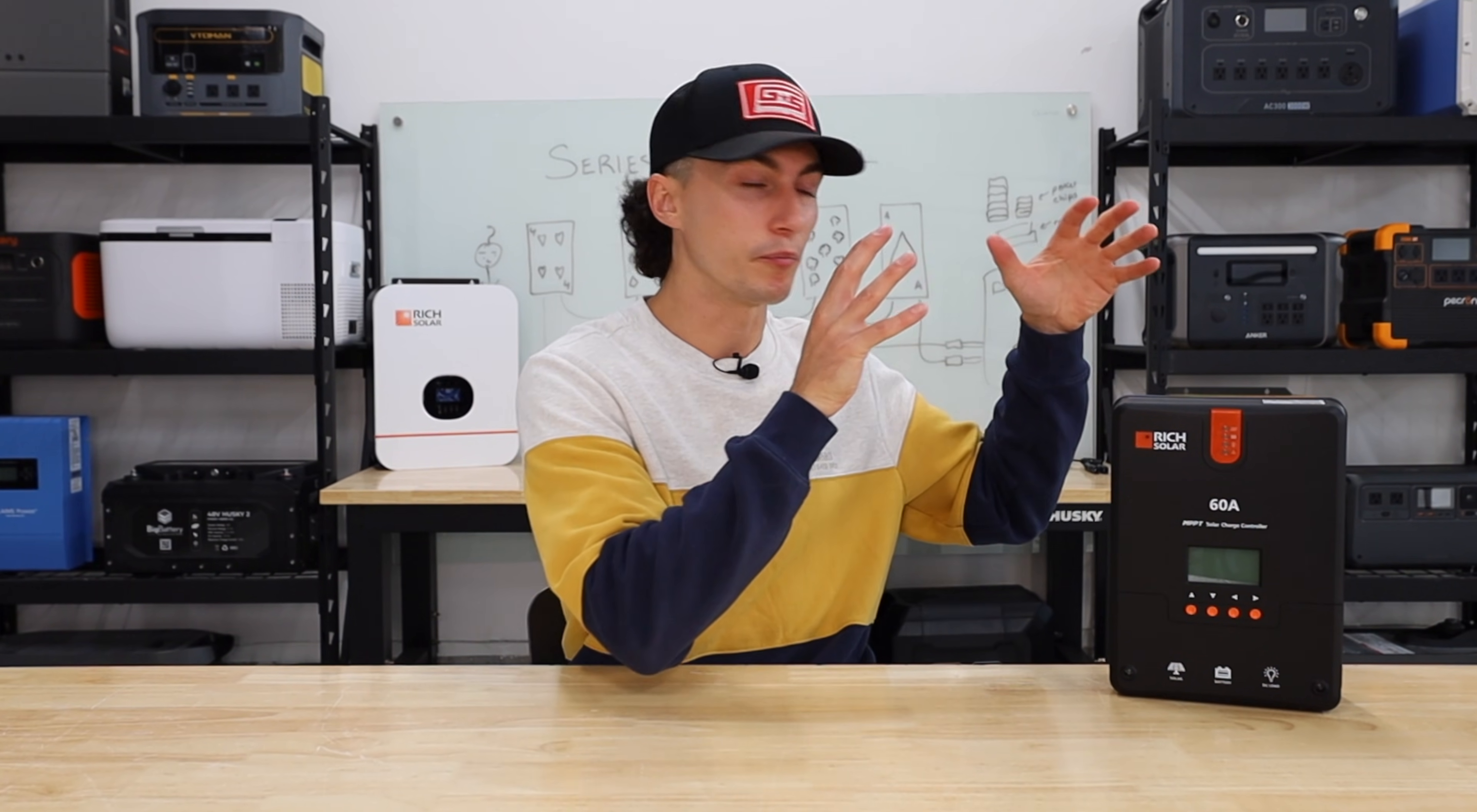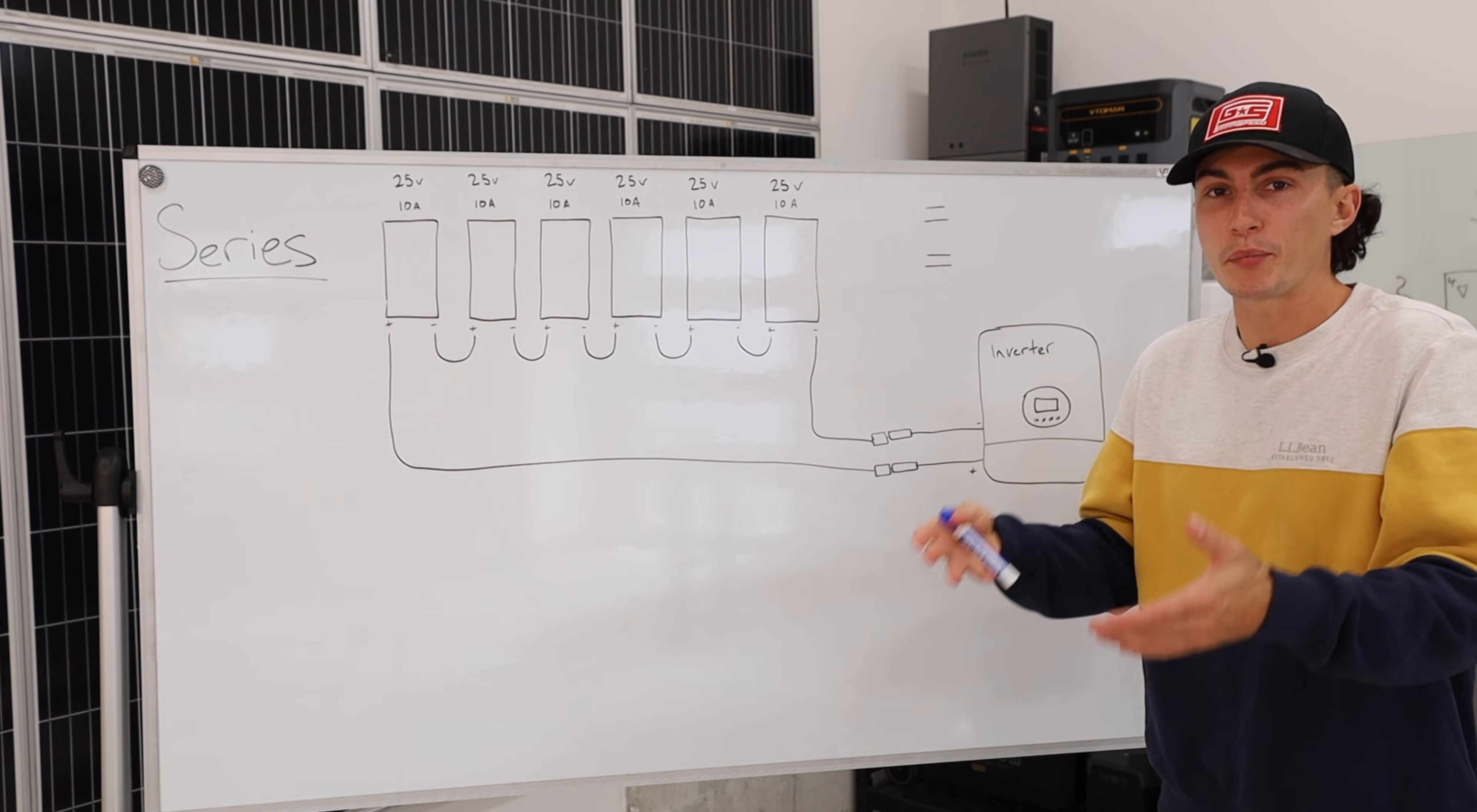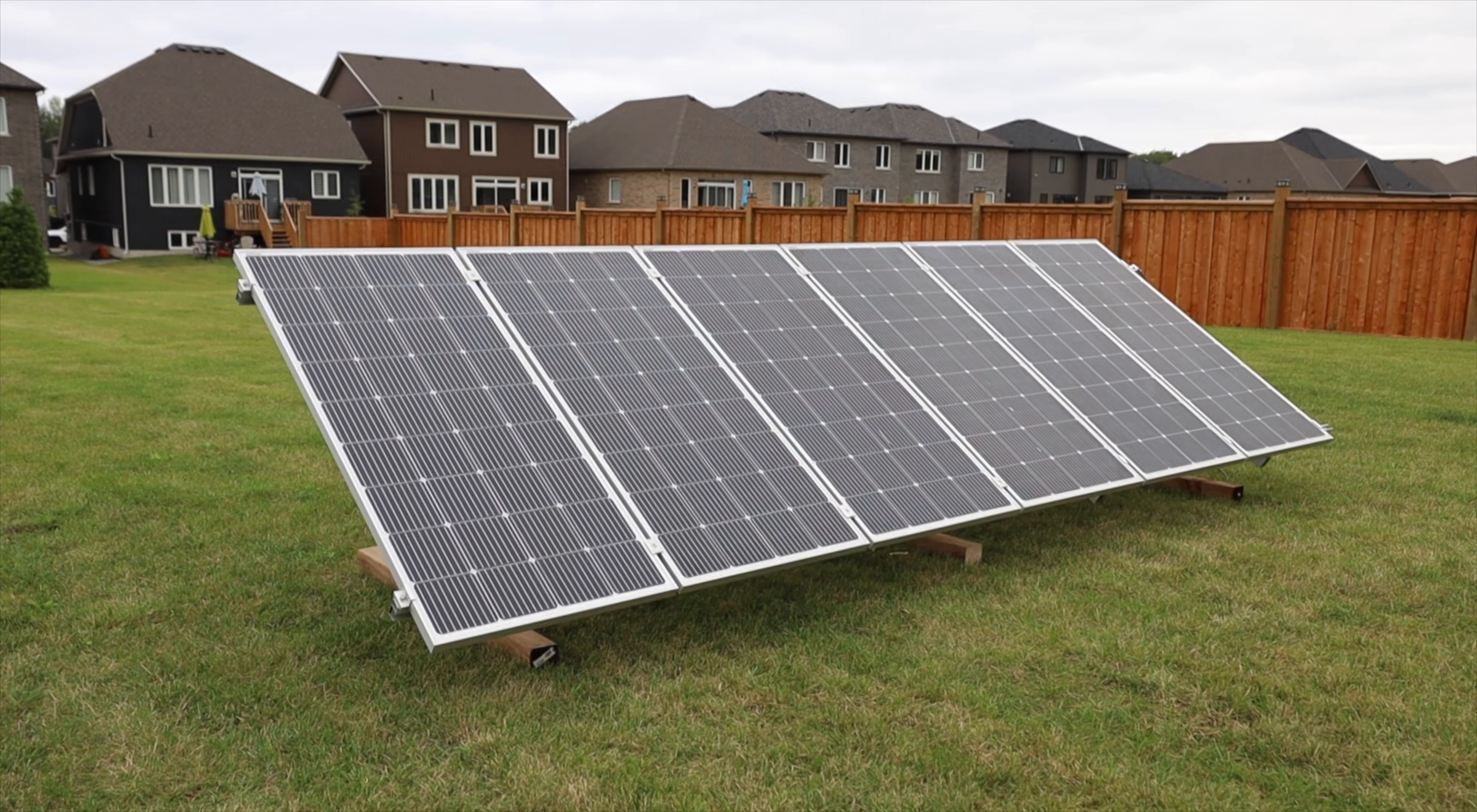The whole purpose of wiring in series or parallel, or both of them combined, is to make your system fit the requirements of your charge controller. So first up, we're talking series. Series is like the go-to way to wire a solar array. It's the simplest, cheapest.